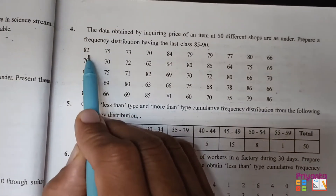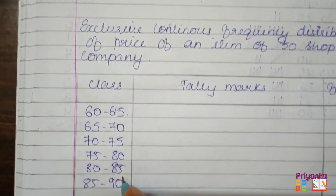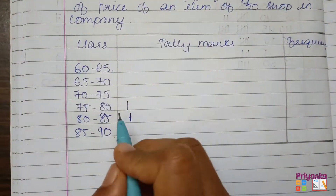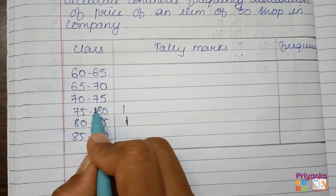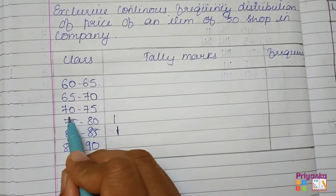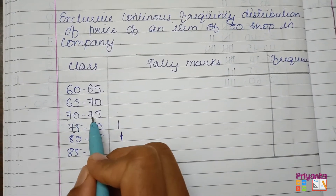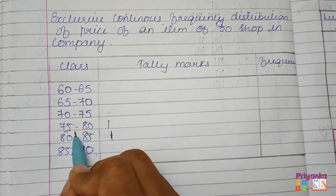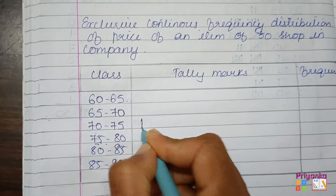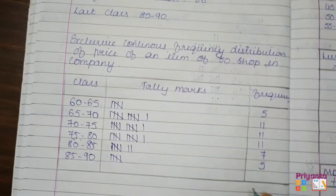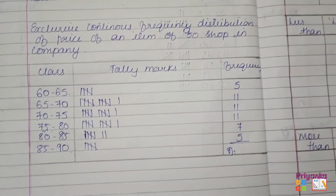Tally marking: 82 goes in the 80–85 class. For 75, remember that in exclusive distribution the lower boundary point belongs to the next class — so 75 is NOT counted in 70–75 but goes into the 75–80 class. Numbers 70 to 74 are tally marked in 70–75. Then 73 goes in 70–75. After completing all tally marking, total frequency n equals 50.